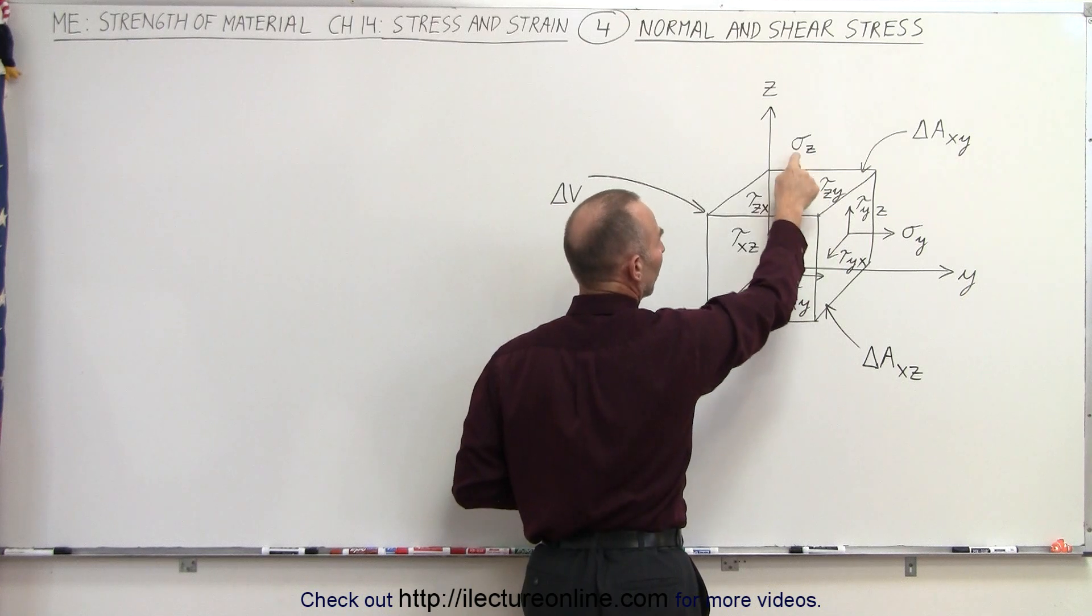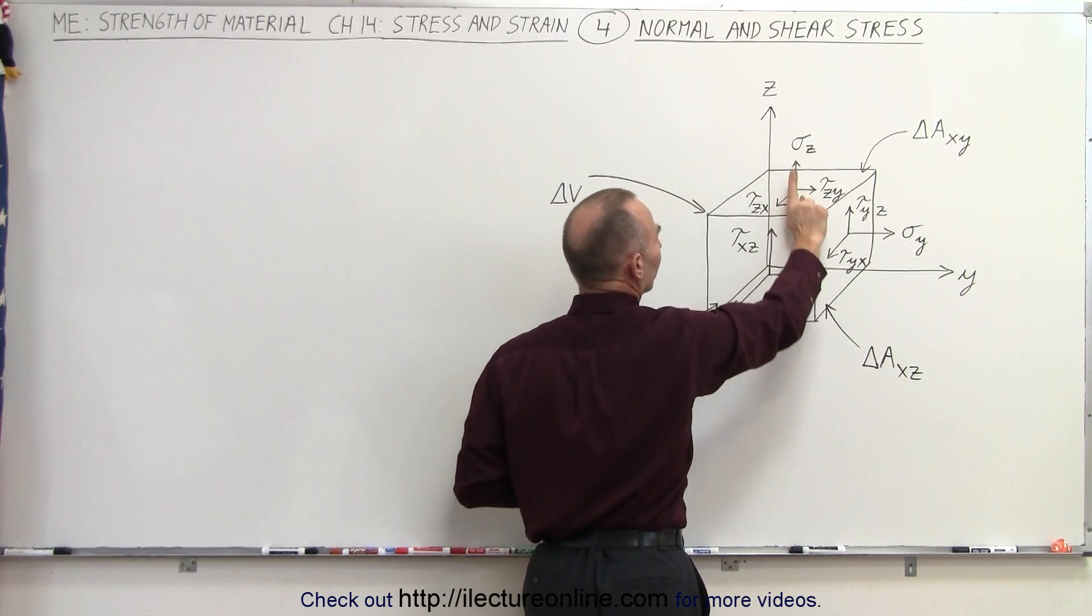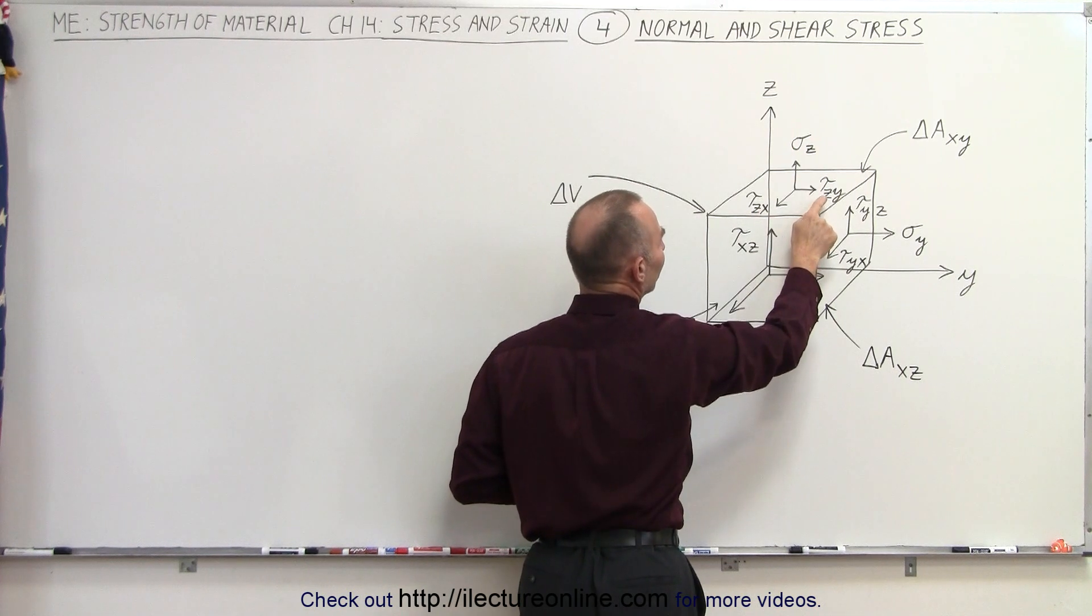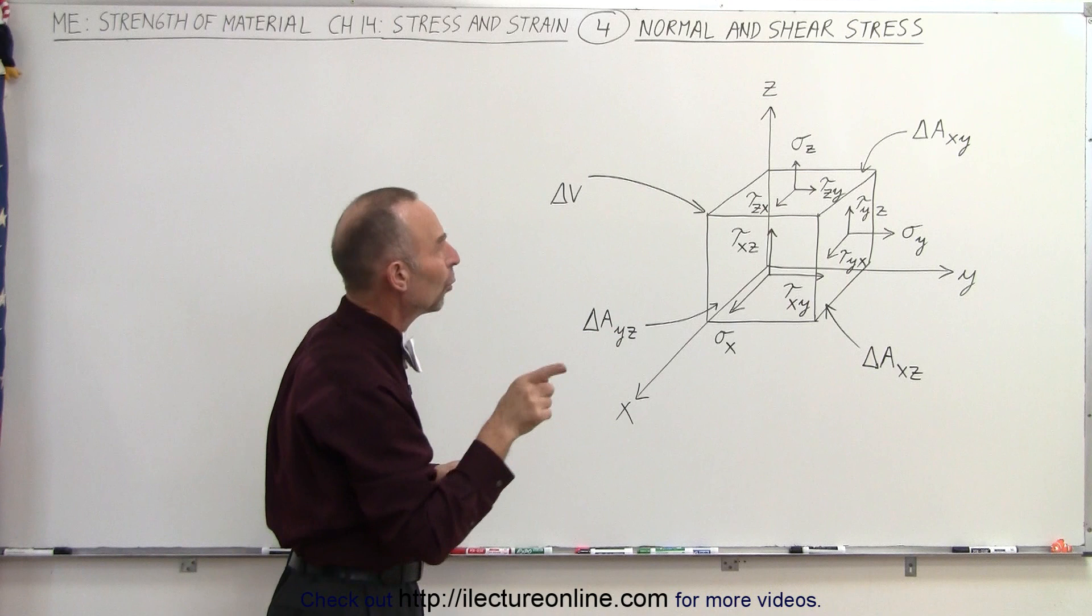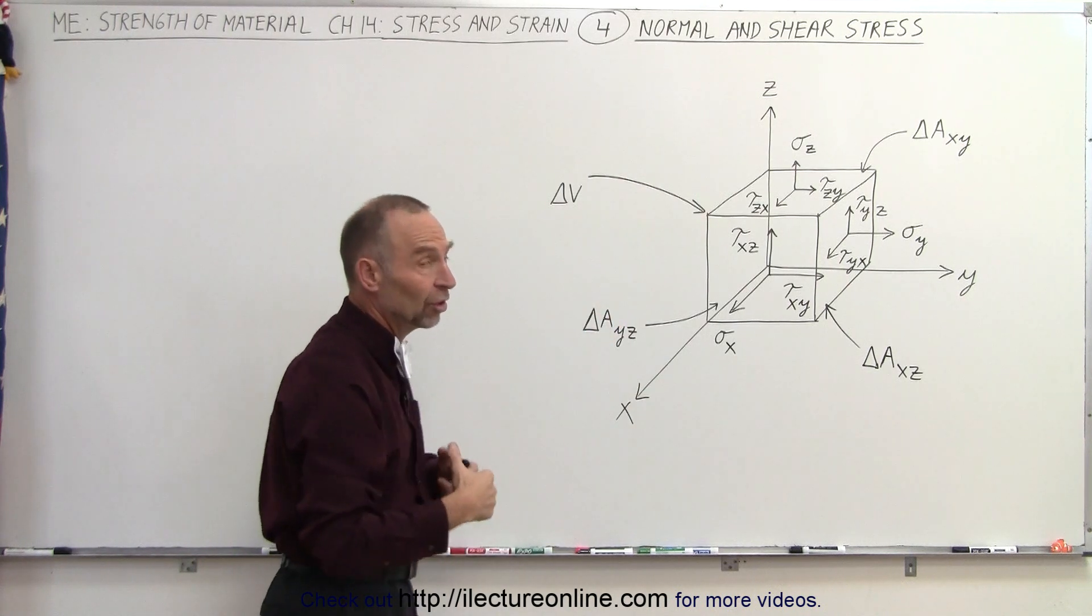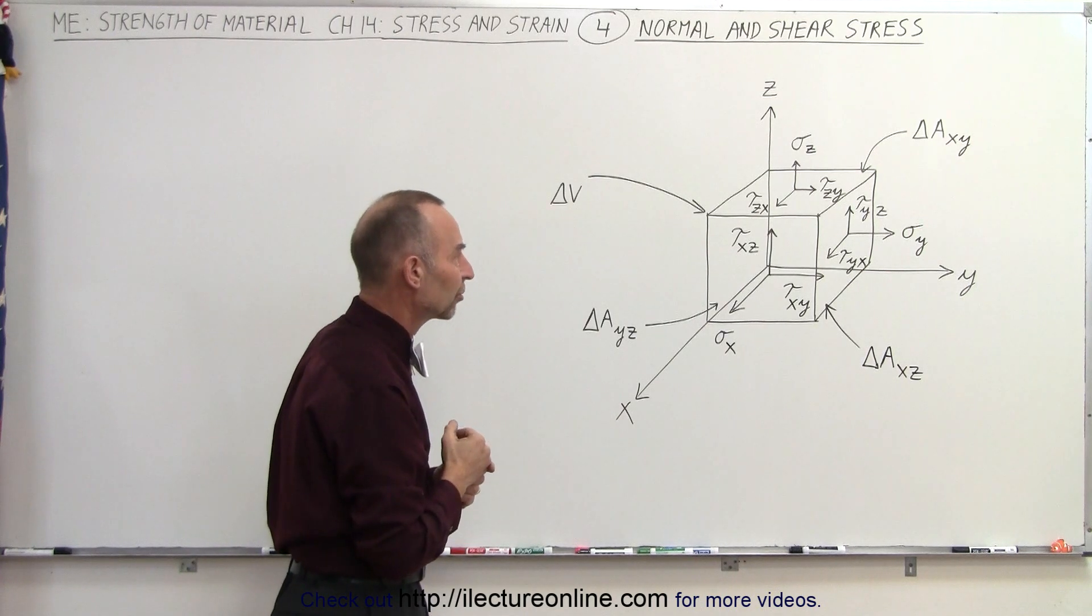We use tau's for the shear stresses, a sigma for the normal stress, z because it's pointing in the direction of the z-axis. And then we have zy and zx. Those are the two shear stresses pointing in the y and in the x direction. These are caused by forces at that location in the y direction and in the z direction.